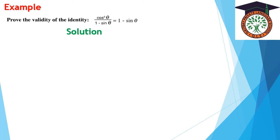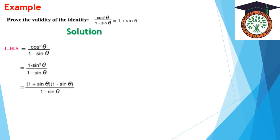Example: Prove that cos²z/(1 - sin z) = 1 + sin z. Starting with the left-hand side: cos²z = 1 - sin²z = (1 - sin z)(1 + sin z). Dividing by (1 - sin z), the (1 - sin z) terms cancel, leaving 1 + sin z, which equals the right-hand side.